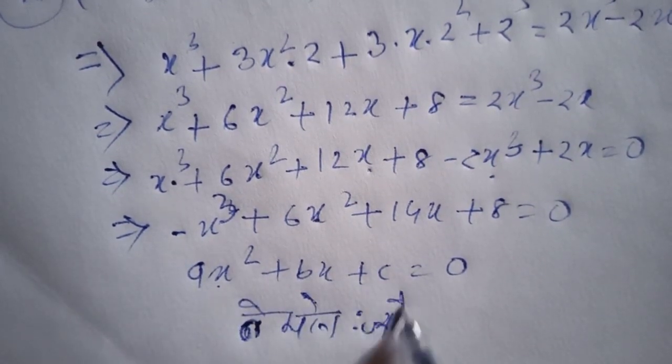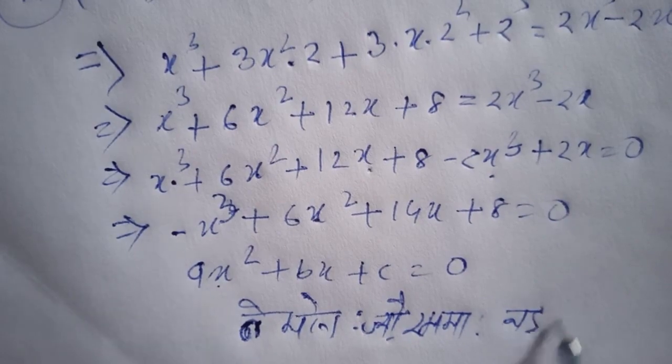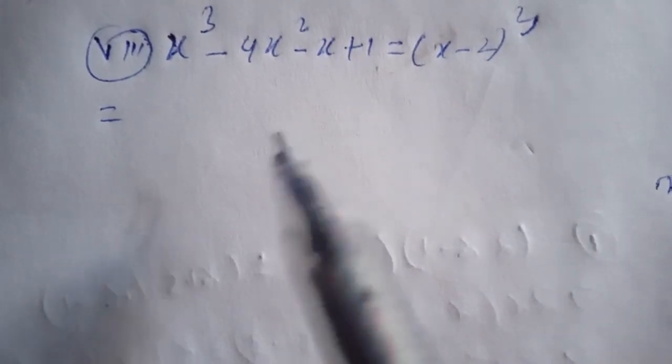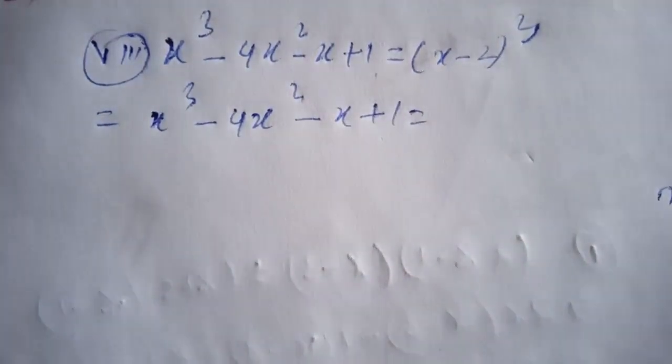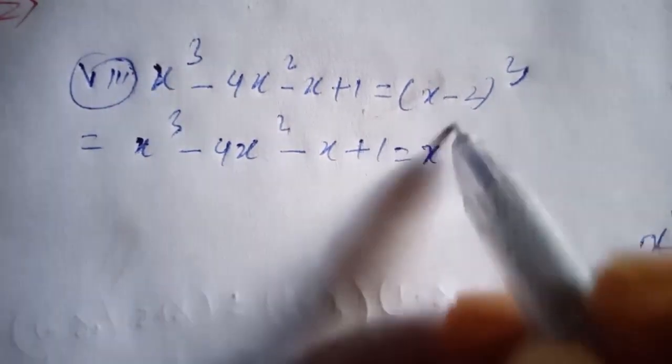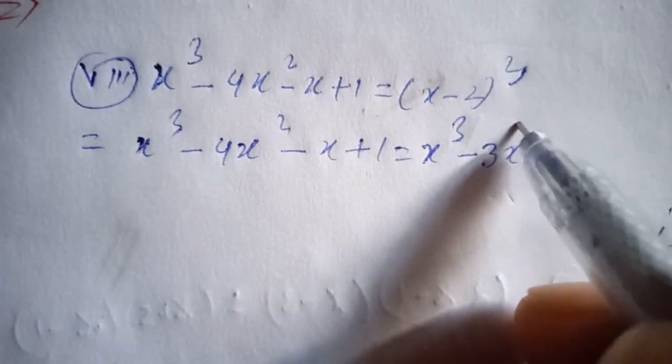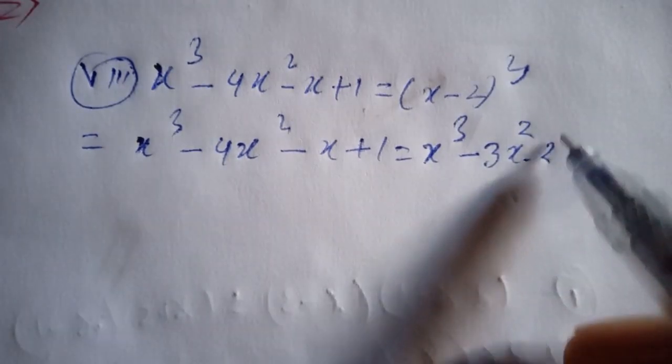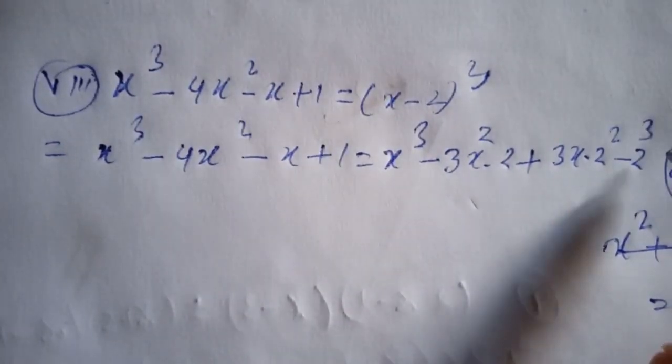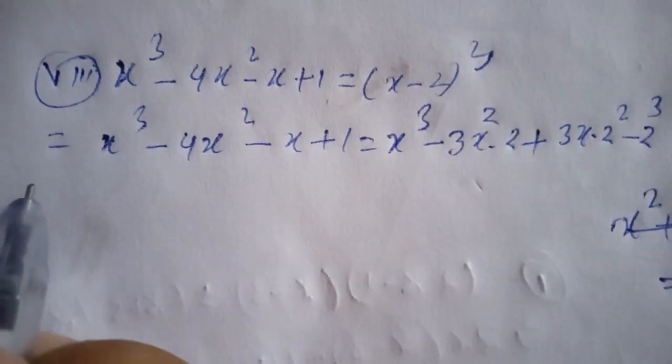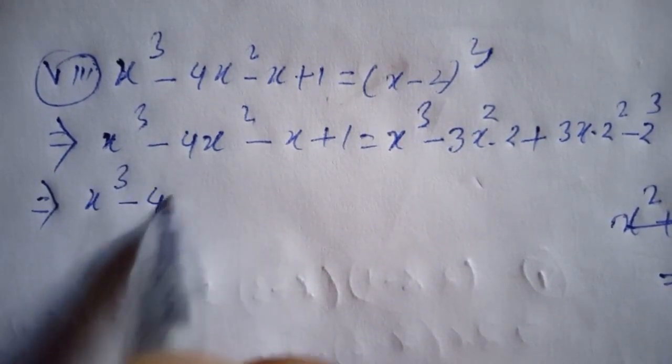Next problem: x cubed minus 4x squared minus x plus 1. Using the formula (a - b) cubed equals a cubed minus 3a squared b plus 3ab squared minus b cubed. Working through the expansion.